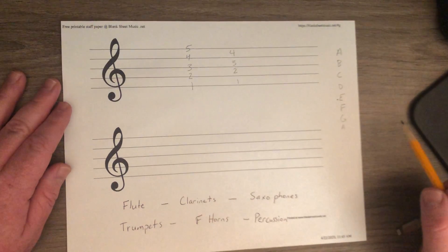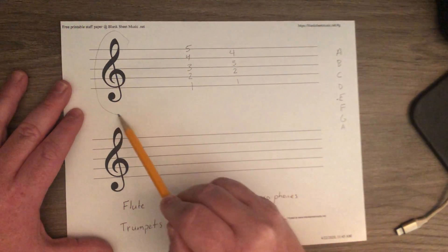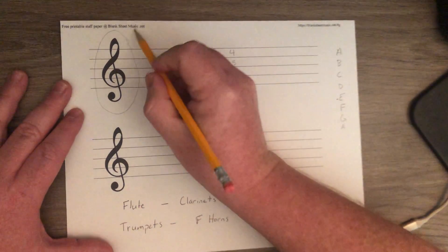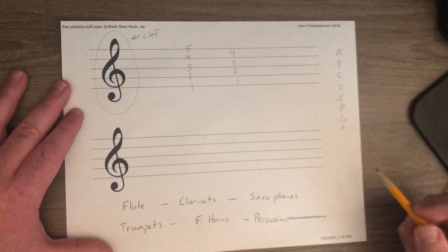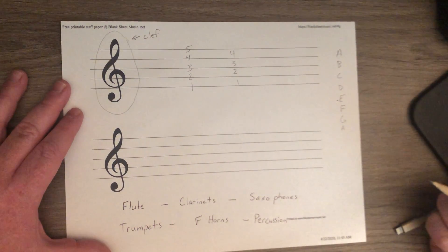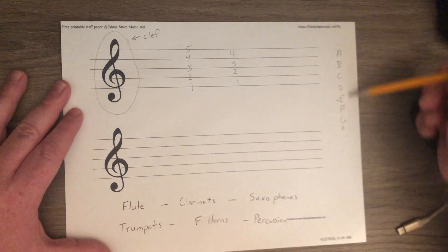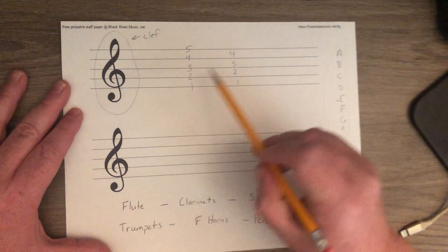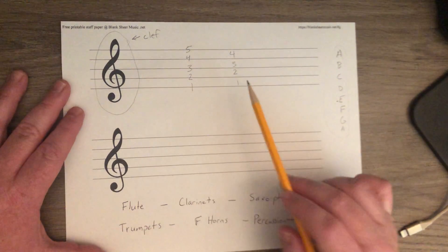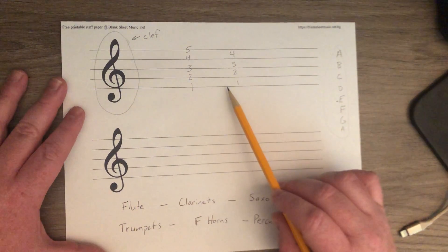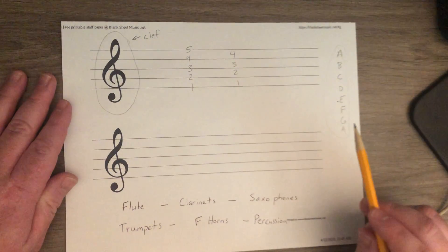Now, the other thing you see on this sheet of paper is this. This right here, that is called a clef. And there are two types of clefs we use in band. But what a clef does is a clef shows you where these note names are going to go on this staff. So without a clef, we don't know what these lines mean. This line could be A, B, C, D, E, F, or G. Who knows? The clef tells us where everything is.